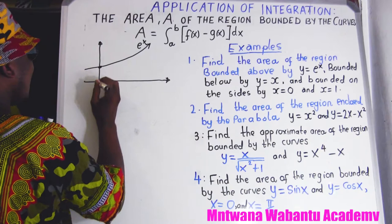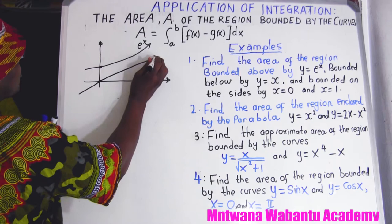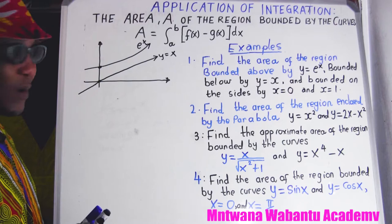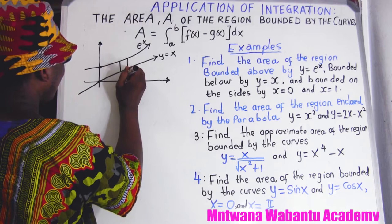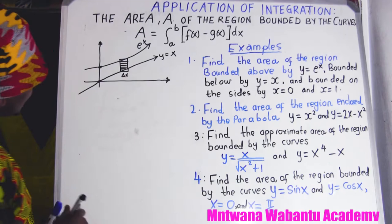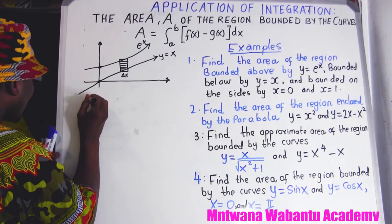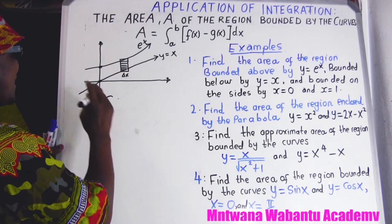The exponential graph y equals eˣ looks like this, and the other graph y equals x cuts at the origin. So y equals x is a straight line through the origin. We want to find the area enclosed between the two curves — that area in between. We use a small strip delta x to represent the area element.